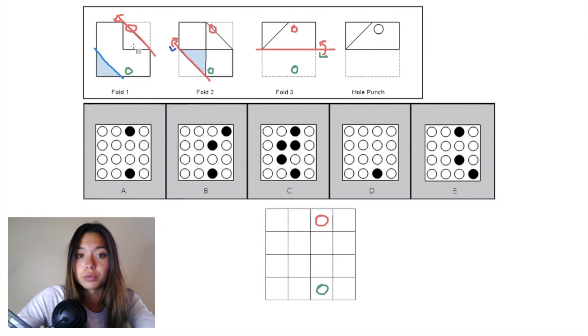We can move on to fold one. When we undo fold one, the piece of paper that was initially folded down is this triangle right here, folded down into this triangle here. It includes that one hole punch, but that hole punch exists on that fold line, so we're just going to be filling in that other half of the hole punch when we undo that fold.